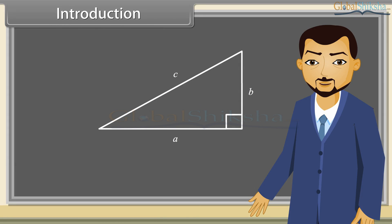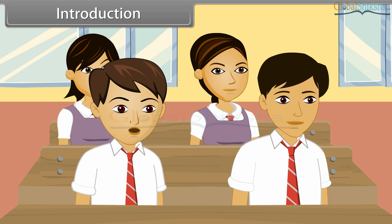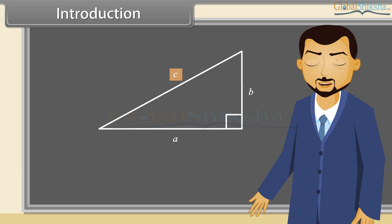Students, this is a right-angled triangle. Can you tell which side is the hypotenuse? C is the hypotenuse. So by the hypotenuse theorem, C square is equal to A square plus B square. We will prove some trigonometric identities.